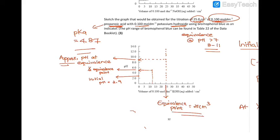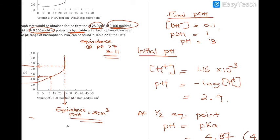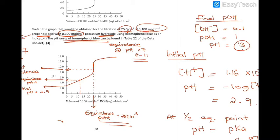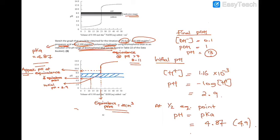From these data points we can sketch the graph: it starts at pH 2.9, rises gradually, then has a sharp rise at the equivalence point, and flattens out at pH 13, which corresponds to 0.1 molar potassium hydroxide (final pOH is 1, so final pH is 13). The pH range of bromothymol blue is 6 to 7.6.